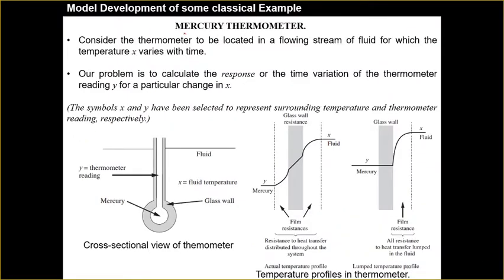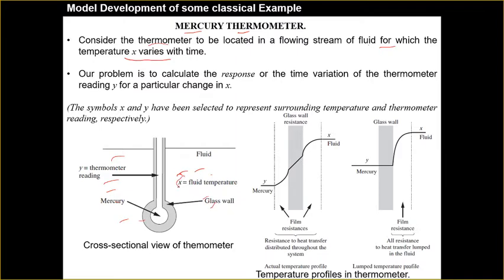Now we come to the model development of the mercury thermometer, which is a very important model. Before developing the model, we assume some physical parameters. We consider a thermometer located in a flowing stream where we want to measure the temperature of that fluid. The flowing stream has a temperature x that varies with time — x is the fluid-side temperature.